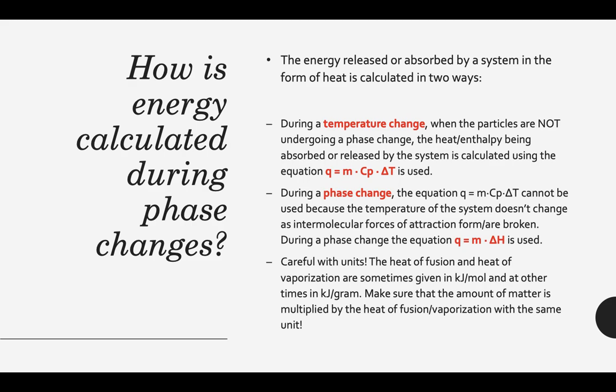We have to be really careful: the heat of fusion and heat of vaporization are different — the heat of fusion for any substance is not going to be the same as its heat of vaporization. We also have to be careful about units. Sometimes they're given in kilojoules per mole, sometimes in kilojoules per gram. You really have to pay attention to the units for the amounts of substance and the units on those heats of vaporization and fusion — make sure they match. If you're given an amount in grams, you can't multiply it by kilojoules per mole.